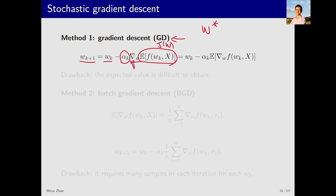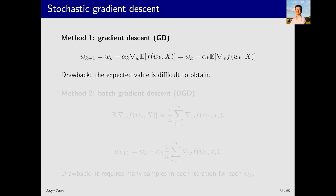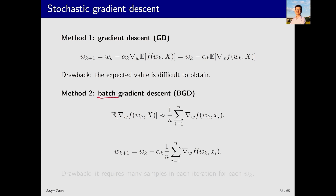Since the objective function involves an expectation, there is a key point: the gradient operator outside the expectation can be moved inside. This means the gradient of the expectation equals the expectation of the gradient — this is easy to see because the expectation is essentially a summation, and moving the gradient operator in or out makes no difference. To compute the expectation of the gradient we have two potential approaches. If we have a model — the probability distribution — we can compute the expectation directly. If we do not have a model, we must use data. This leads us to batch gradient descent, abbreviated as BGD. The idea is straightforward: since we don't have a model, we sample the random variable many times, say N times, and calculate the average to approximate the expectation.